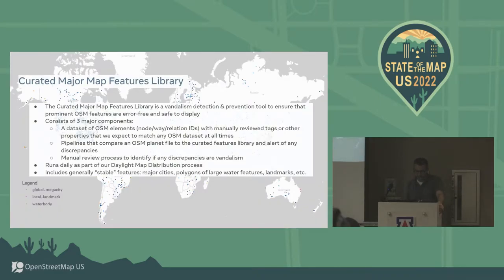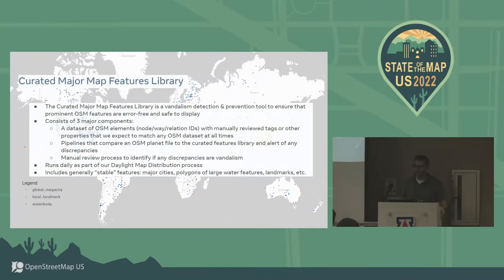Basically, what the Curated Major Map Features Library is is a way of eliminating vandalism and preventing it from affecting prominent OSM features — preventing vandalism and errors from showing up in production and making sure that they are safe to display. It consists of three components. The first is a dataset of OSM elements — nodes, ways, and relations — with manually reviewed tags and other properties that we expect to match the planet at all times.